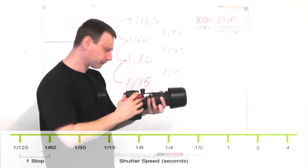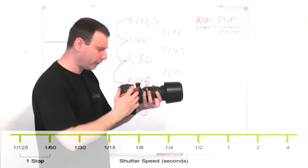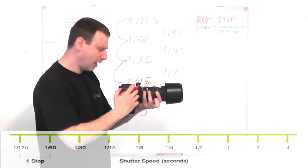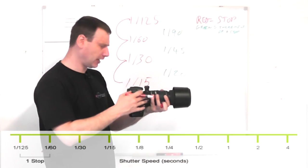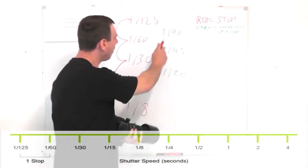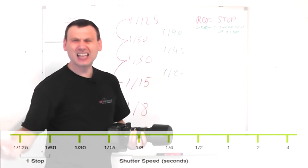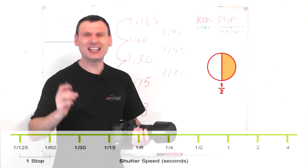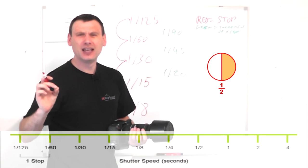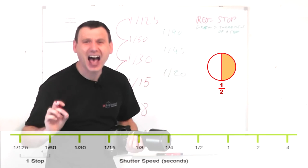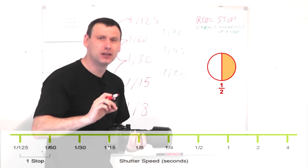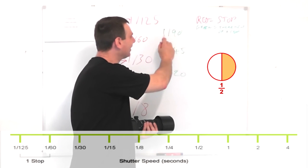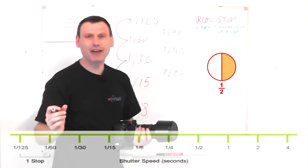However, if I go on to 1/125th on my camera and then if I move now to the left, I get 1/90th of a second. But the thing is 1/90th of a second is not a stop. In fact it's half a stop. So what you're seeing here is an increment of half a stop.